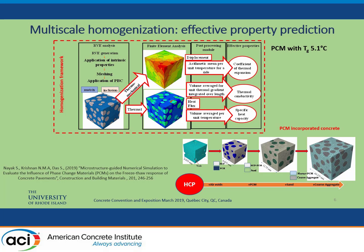At each step, we generate a random microstructure with randomly placed inclusions and apply intrinsic properties to each phase. We then mesh it, apply periodic boundary conditions, and subject it to thermomechanical or thermal excitations — essentially heat gradients. From this we obtain the effective properties: coefficient of thermal expansion, thermal conductivity, and heat capacity — all essential for the macroscale analysis of the pavements.